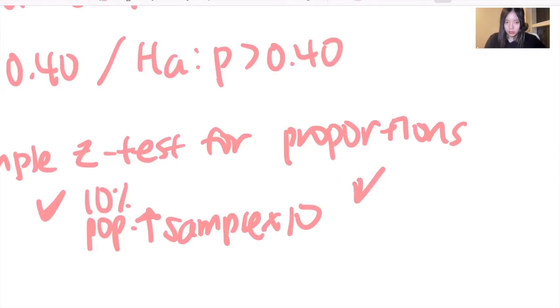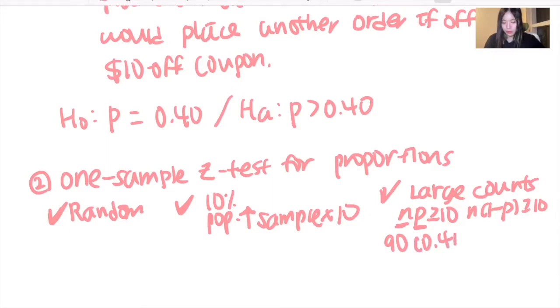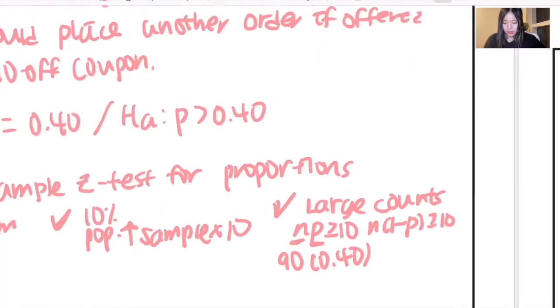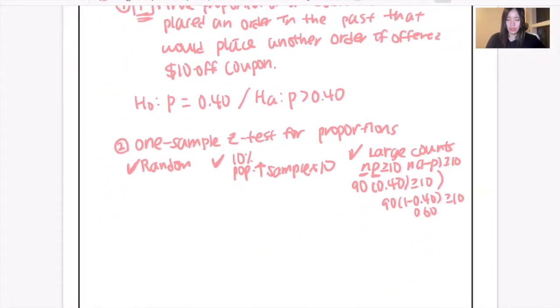And lastly, the large counts, so whether np is larger than 10, and n(1-p) is also larger than 10. We need to check this. And the n here is the number of customers, so it's 90. And the proportion would be this. And if you calculate it, it's larger than 10. And also for this, 1 minus, which is equal to, is larger than 10. So all of the conditions are met.